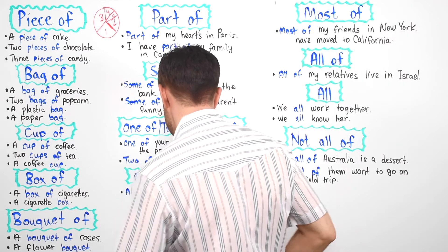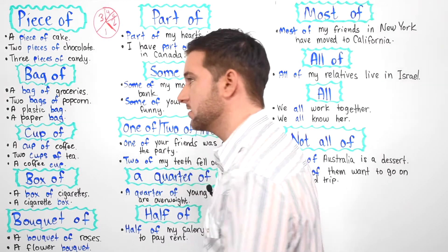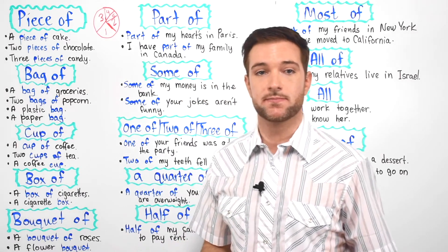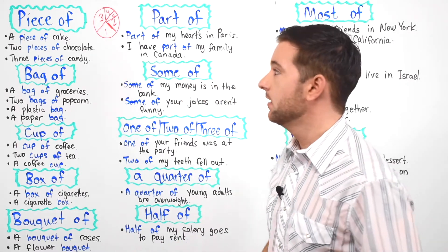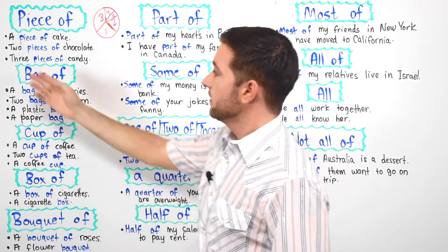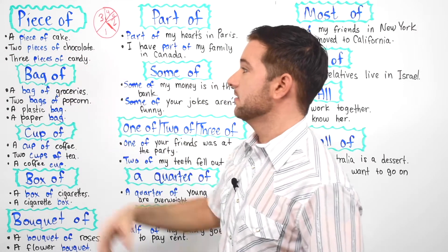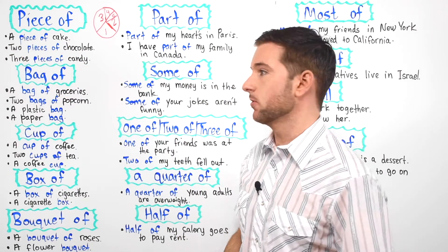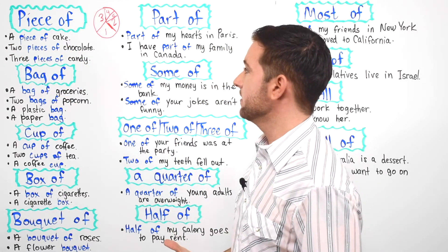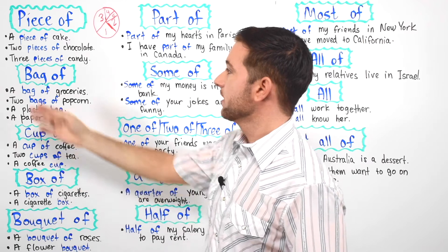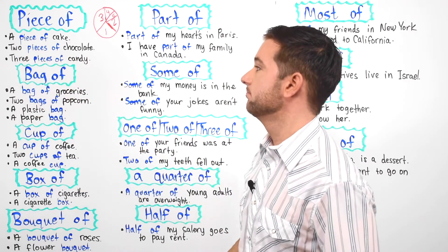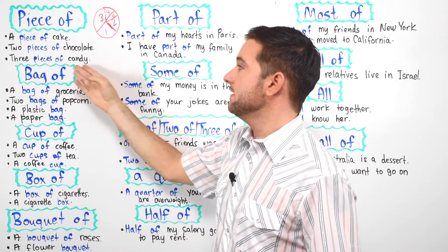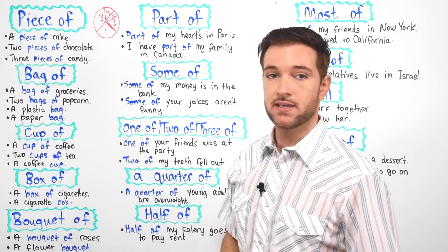A piece can be big or a piece can be small — it can come in different sizes. So here we have a piece of cake, like a piece of birthday cake or a piece of wedding cake, two pieces of chocolate, and three pieces of candy.